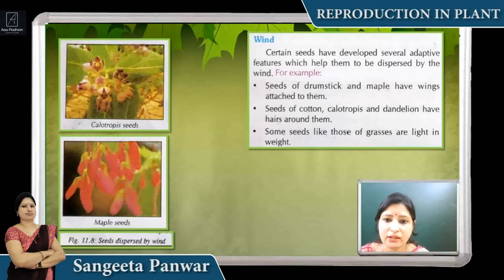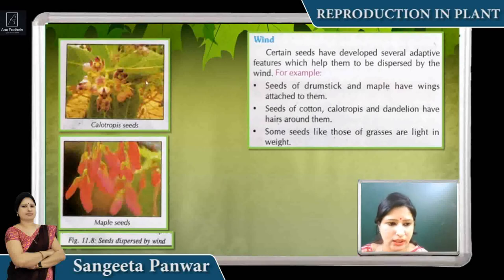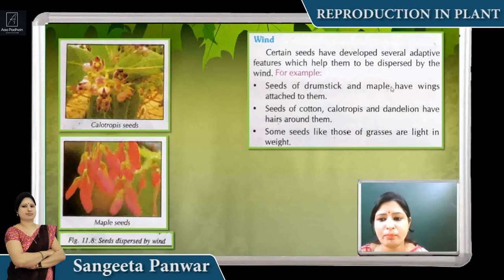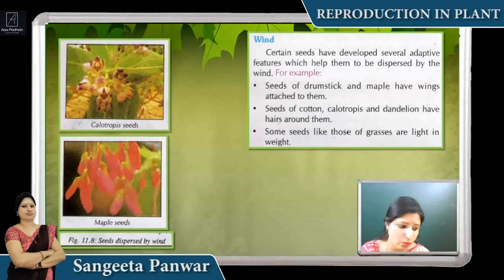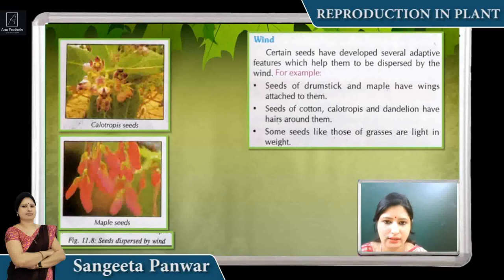One method of seed dispersal is by wind. Many seeds have features like drum-stick-like structures, hair-like structures, wings, and they are light in weight. Because of their light weight, they flow with the wind from one place to another and reach far-off places.